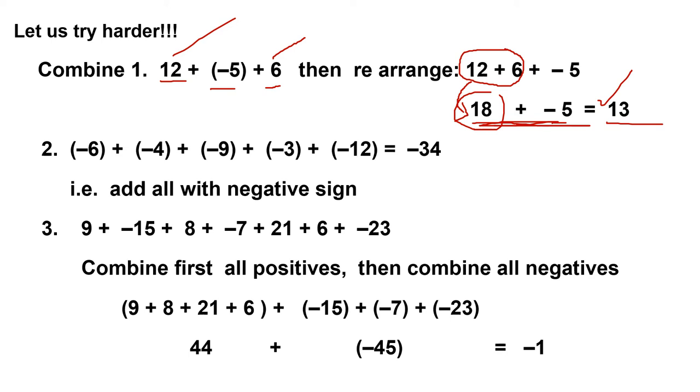Also, for example number 2, if we are going to add negative 6, negative 4, negative 9, negative 3, and negative 12, what will be the answer? Since all of them have negative signs, we can just add them all up. So it equals negative 34.